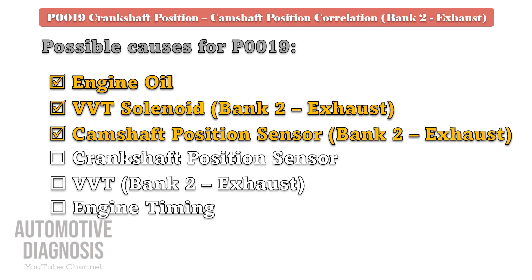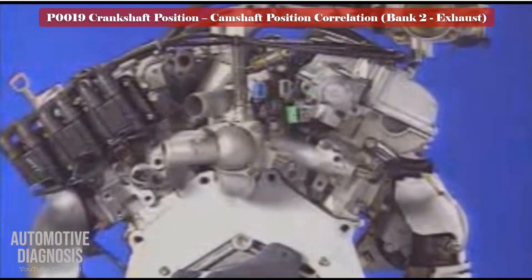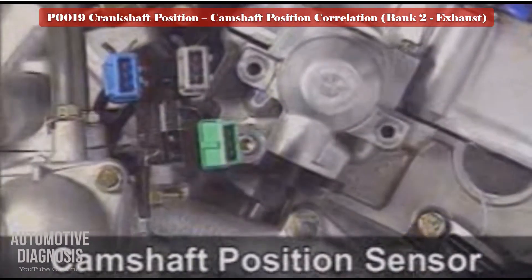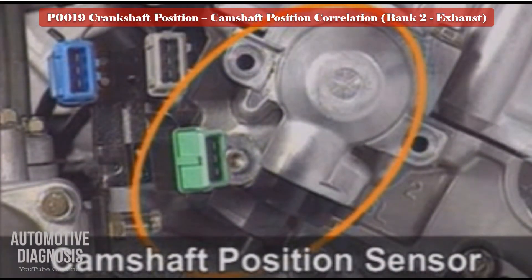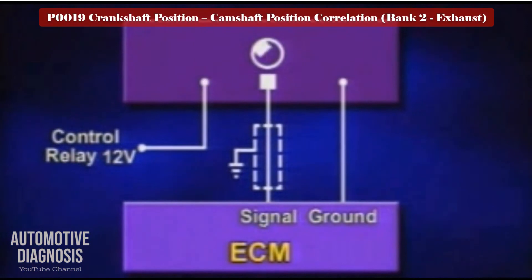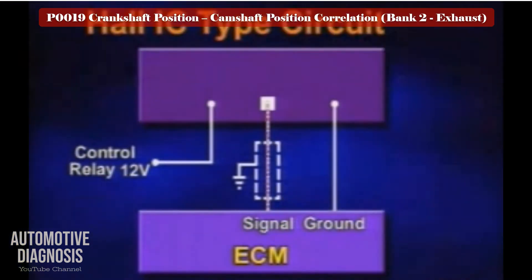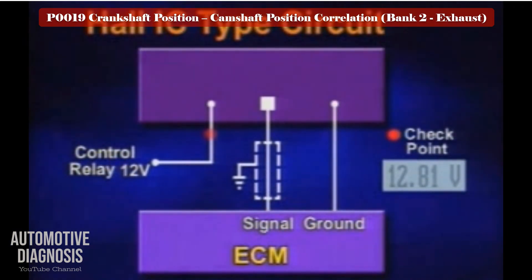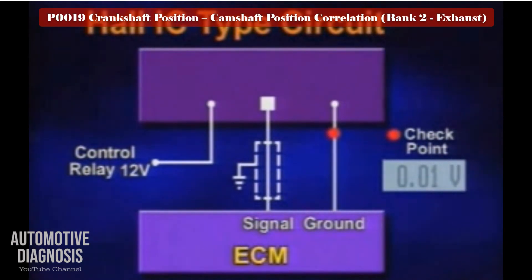Bank 2 exhaust camshaft position sensor testing procedure. Locate the camshaft position sensor installed at the end of the bank 2 exhaust camshaft. This sensor reads the camshaft position and sends the signal to the PCM. Most of the time this sensor is the hall effect type with three pins: one pin is the power supply from the engine control relay requiring battery voltage when ignition is on, another is the sensor signal at around 5 volts, and the last is the ground. Check the wiring and remove the sensor to check it visually.